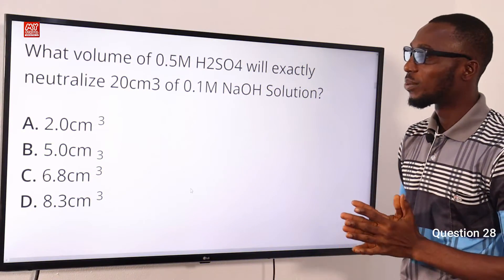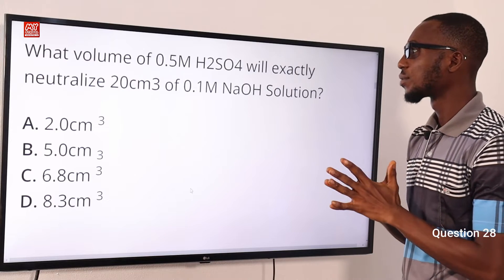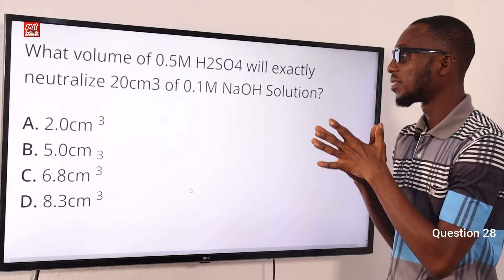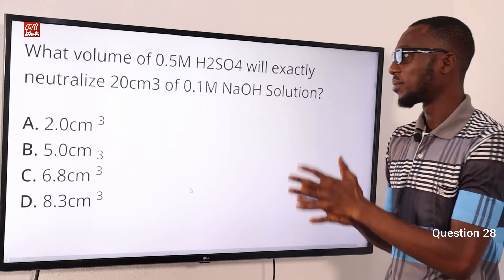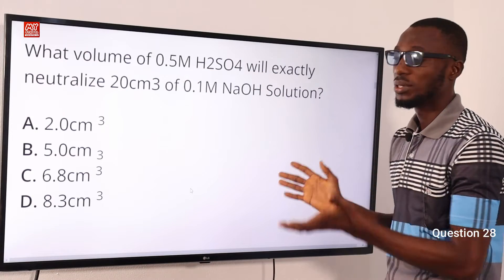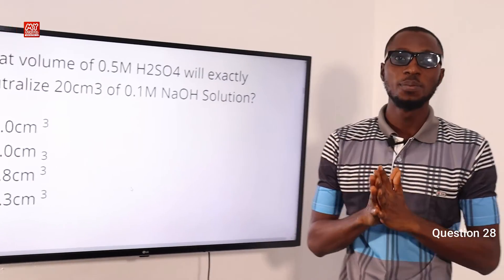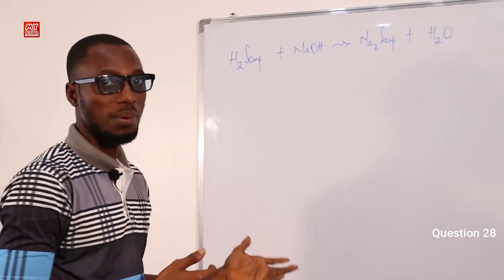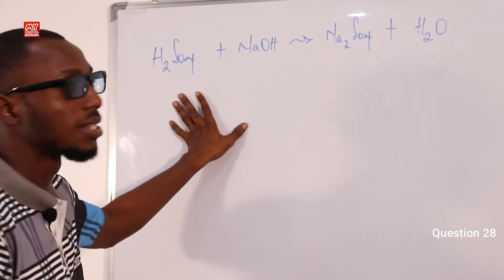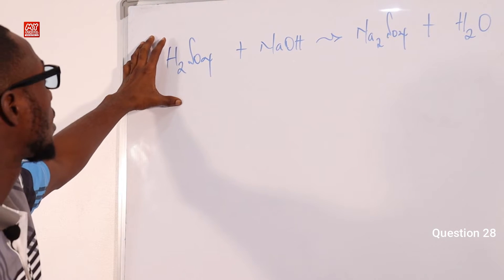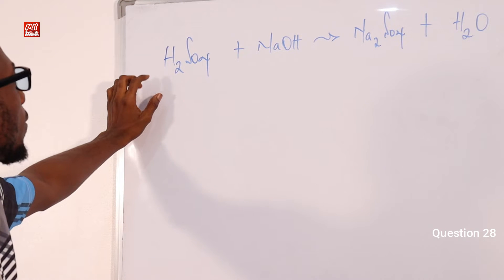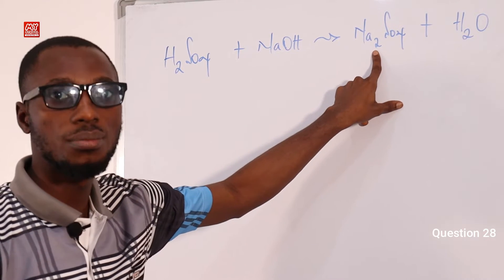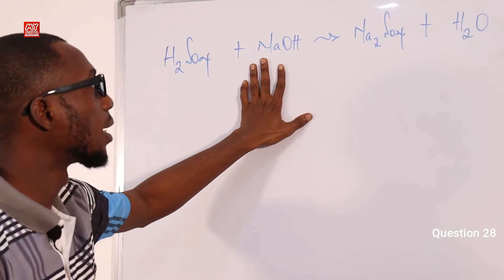Question 28. What volume of 0.5 mol/L H2SO4 will exactly neutralize 20 cm³ of 0.1 molar concentration sodium hydroxide solution? The first thing we have to do is produce a balanced equation for the reaction. Looking at the equation, from the reactant side we have one mole of sodium atom, while on the product side we have two atoms of sodium. So this is not yet balanced.